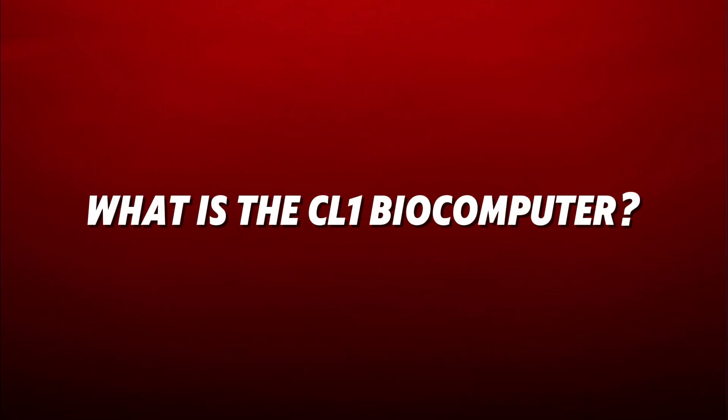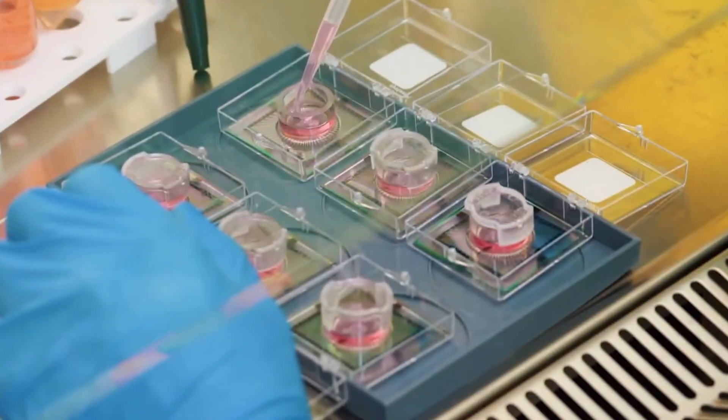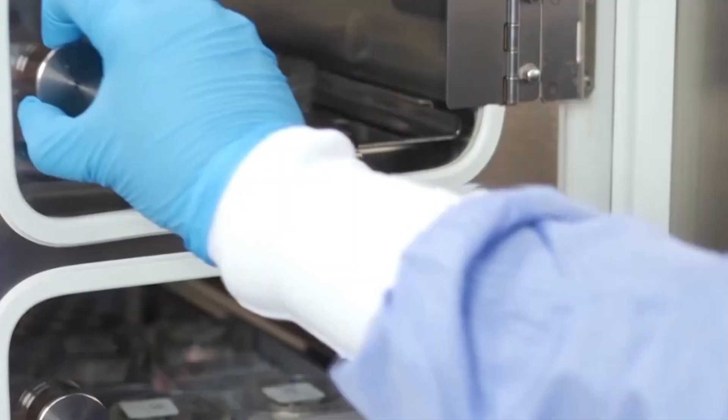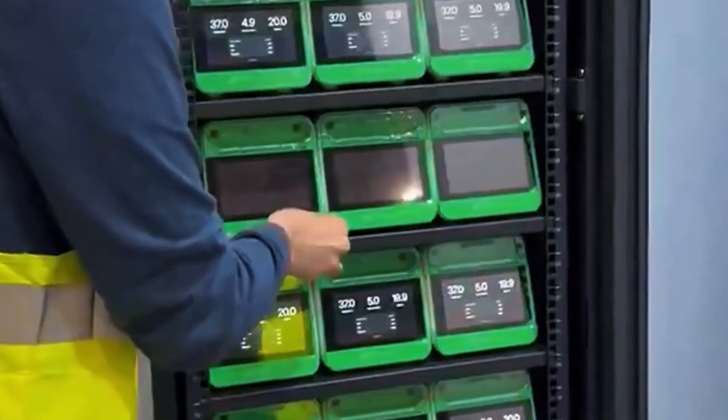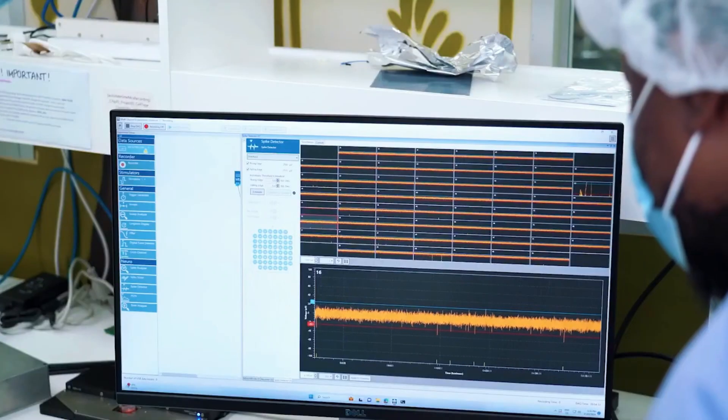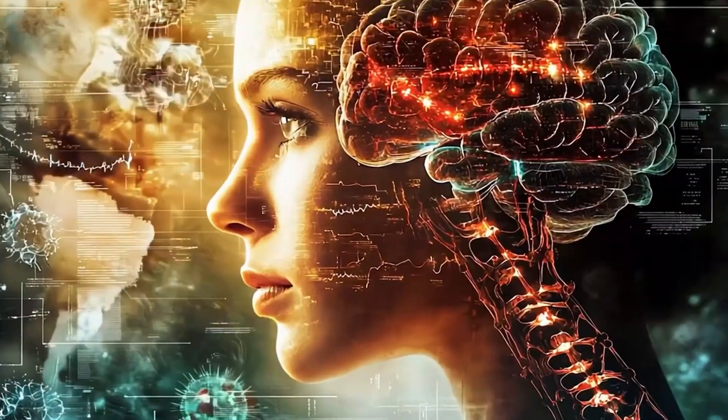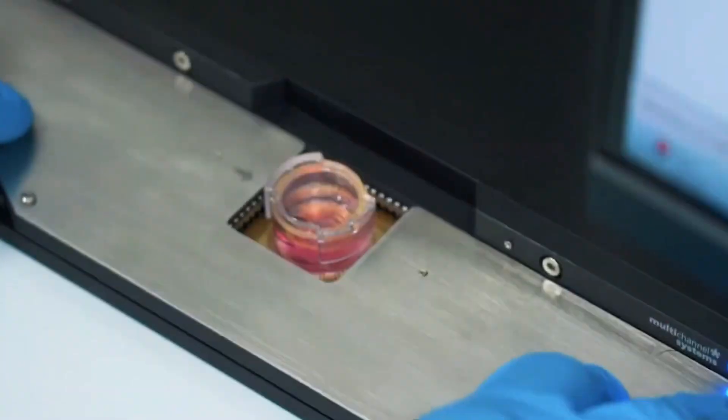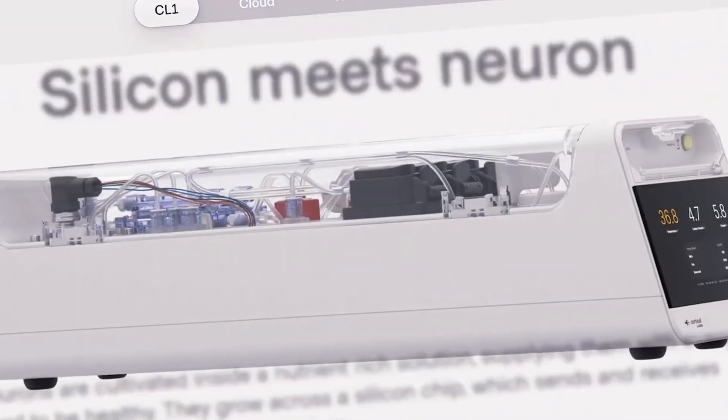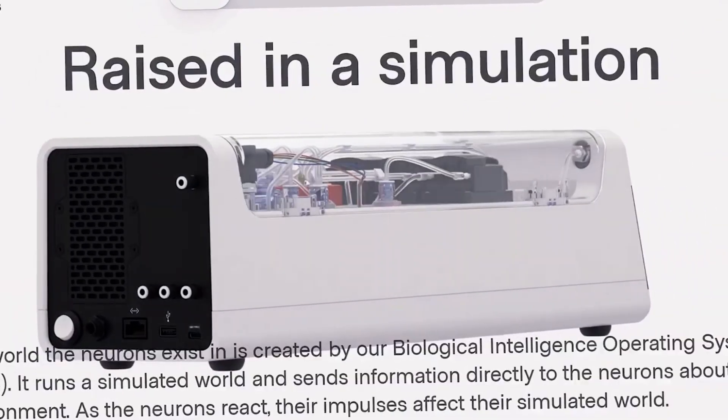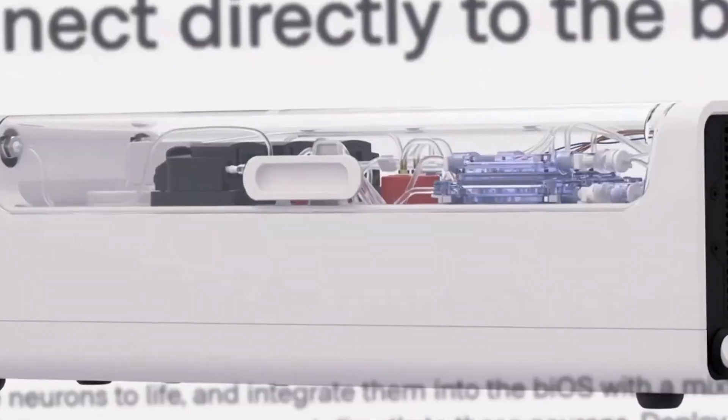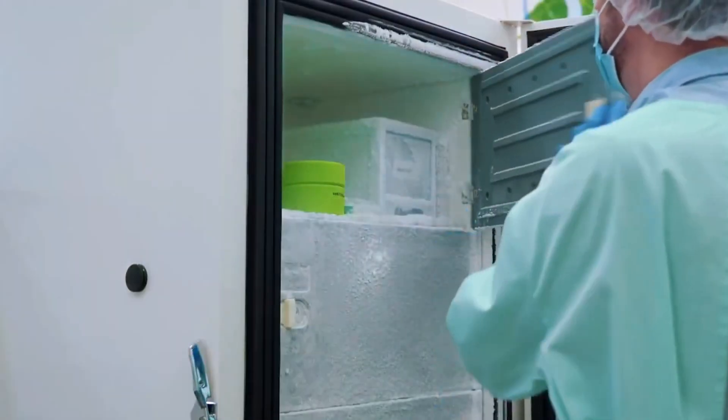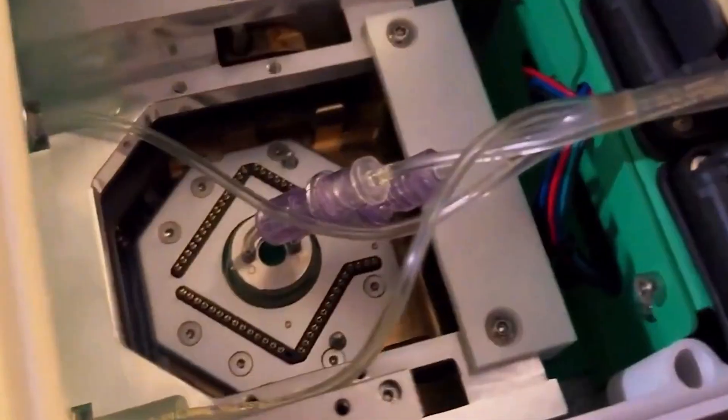What is the CL1 Biocomputer? The CL1 Biocomputer is not your average computer. Developed by Cortical Labs, an Australian-based company, this biocomputer takes biological human brain cells and integrates them with silicon chips to create an entirely new type of AI. Unlike traditional silicon-based AI, the CL1 is more flexible, learns faster, and consumes much less energy. It's the future of computing, and the good news is, it's already here.